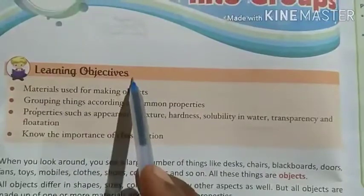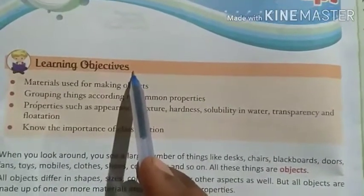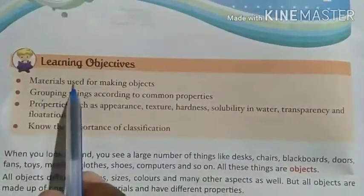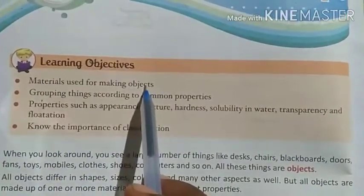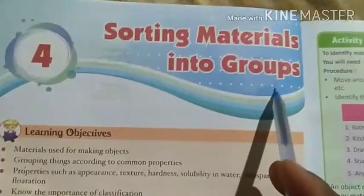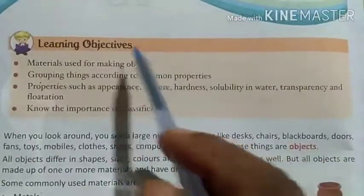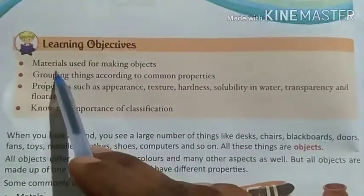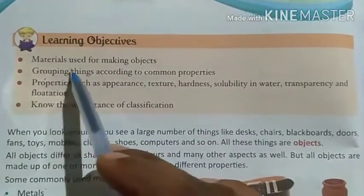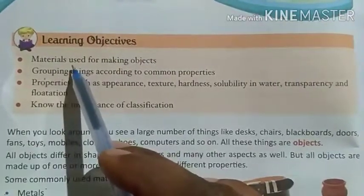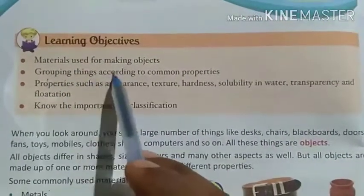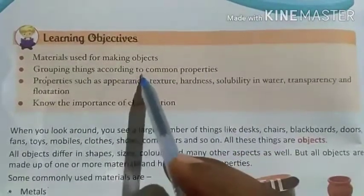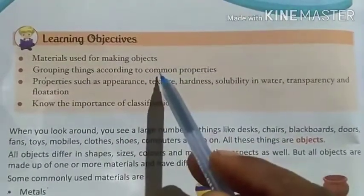Firstly, we see the learning objectives of this chapter. The first objective is: Material Used for Making Objects — object banane ke liye kone kone se material use karte hai, hum is chapter se learn karenge. Then: grouping things according to common properties, and we will learn about common properties of materials.